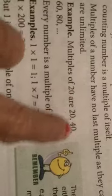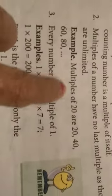That is, multiples of 20: 20, 40, 60, 80, and it will go on.